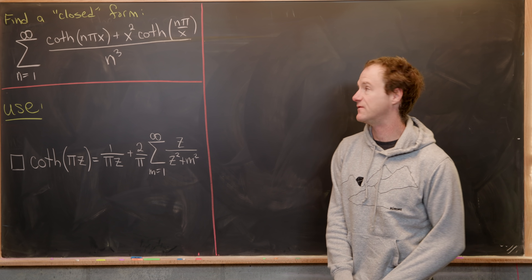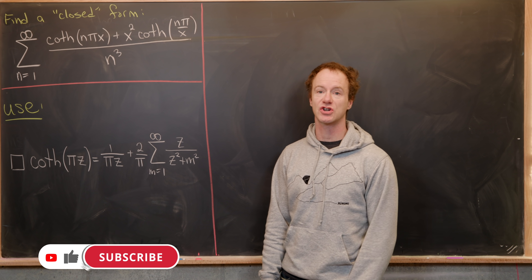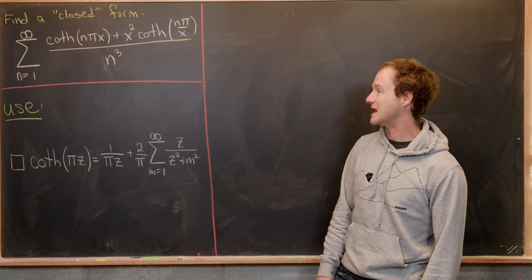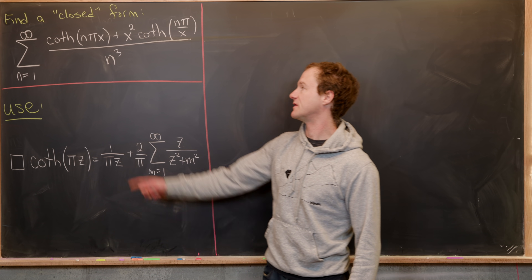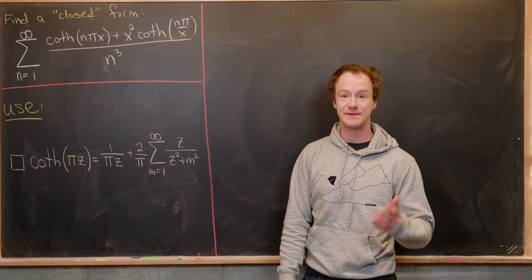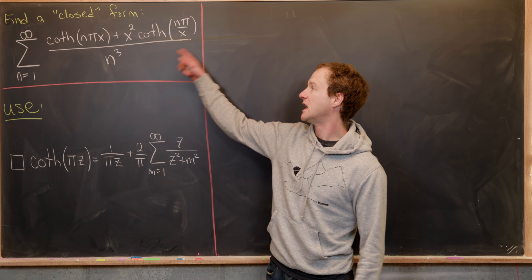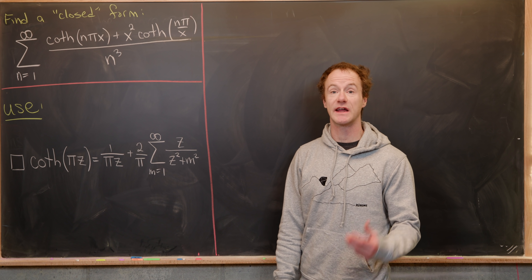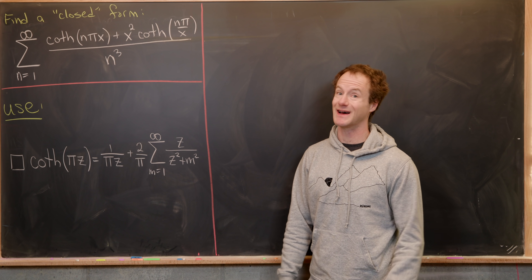Here we're going to look at a surprisingly nice infinite series. This series was actually in the first letter that Ramanujan ever sent to G.H. Hardy. It's the sum as n goes from 1 to infinity of the hyperbolic cotangent evaluated at n*pi*x, plus x squared times the hyperbolic cotangent evaluated at n*pi over x, all divided by n cubed. It's quite surprising that a series like this collapses to something pretty nice.